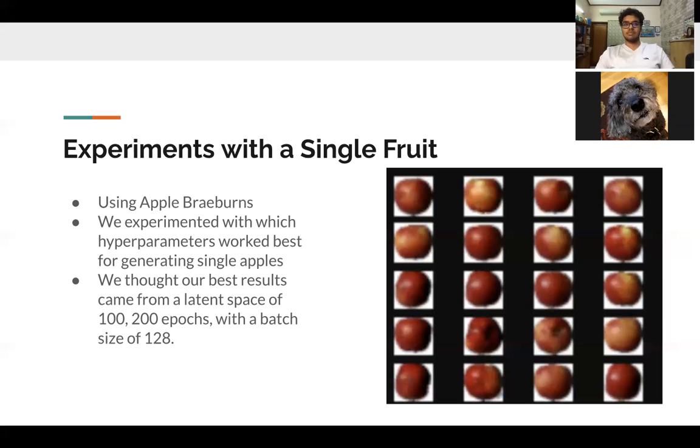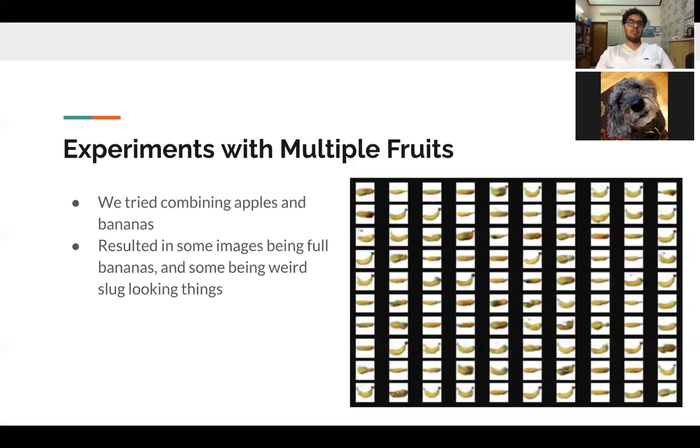We also tried to experiment with multiple different fruits where we combined, in this case, apples and bananas. We can see in the results here that they look pretty good. We have a lot of images of just bananas, but we also have images that look like slugs that are supposed to be combinations of apples and bananas. So we aren't super sure how plausible our model is right now for this specific purpose. It would be interesting to look at where this would go if we tweak our model specifically with this purpose.